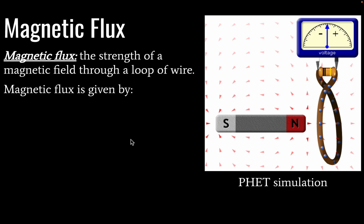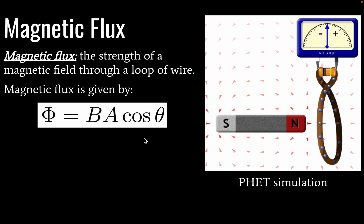So magnetic flux is defined as the strength of a magnetic field through a loop of wire. Right now we have magnetic flux in our system. And that value is going to be given by this equation. Here we have a Greek letter. This is called phi. And this then will be equal to b times a times cosine of theta.